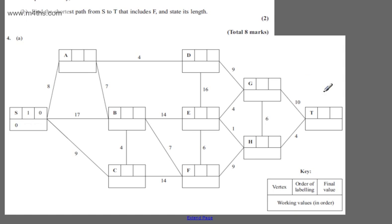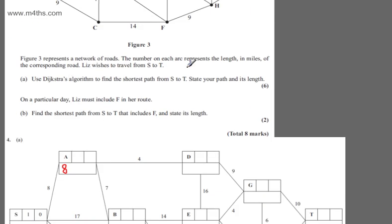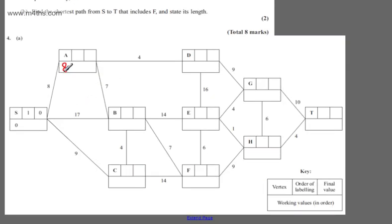We're starting at S and finishing at T. With Dijkstra's algorithm, what it does is find the shortest path from S to any other vertex in this network. So we could find the shortest path from S to E, S to G — ultimately we're looking for S to T. What we have now is our key: this is the vertex, this is the order of labelling, this is the final value, and these are our working values in order.